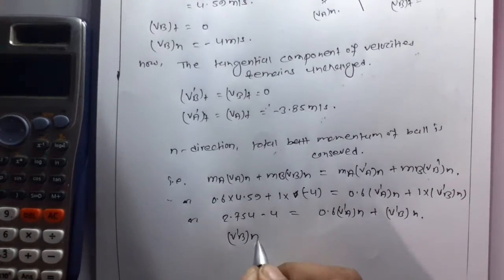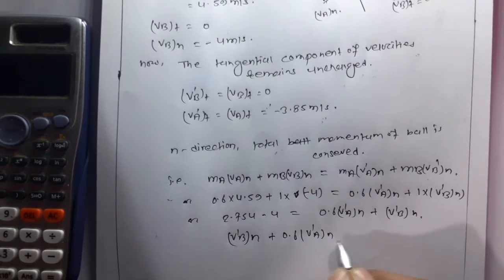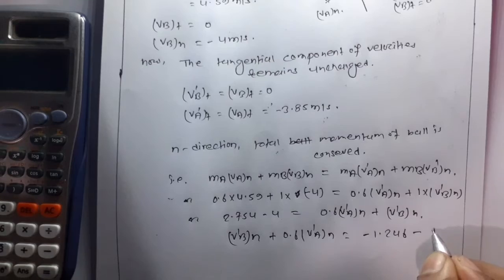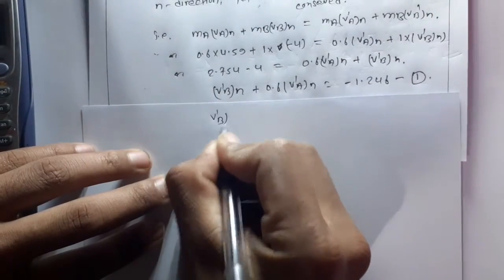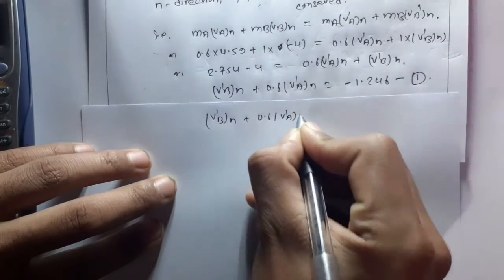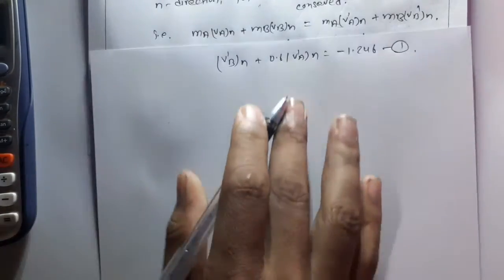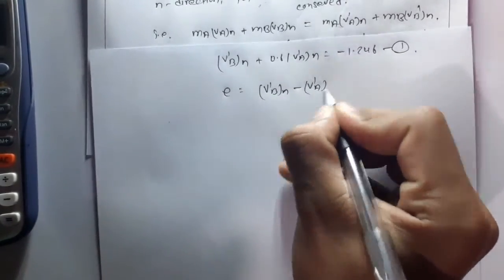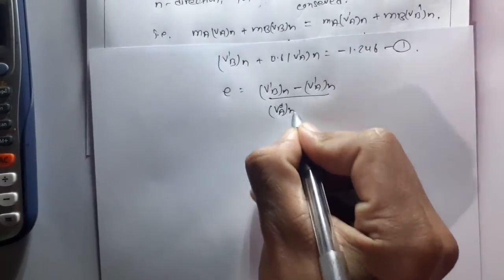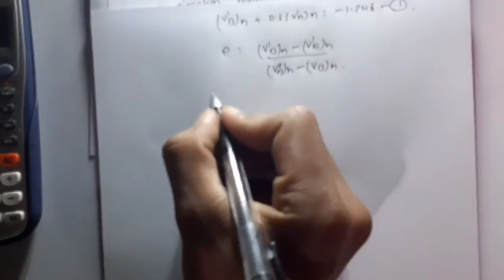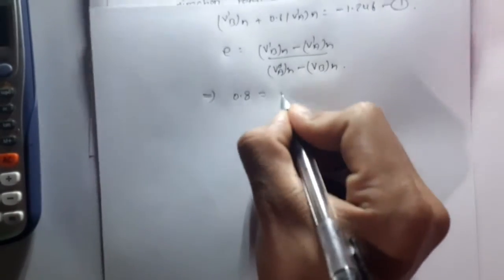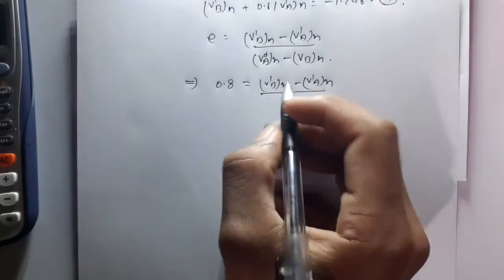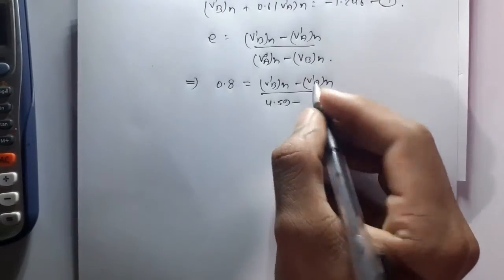So V'_BN + 0.6·V'_AN = minus 1.246. This is equation number 1. Now, the coefficient of restitution is given by: e = (V'_BN − V'_AN) / (V_AN − V_BN). So 0.8 = (V'_BN − V'_AN) / (4.59 − (−4)), which is 0.8 = (V'_BN − V'_AN) / 8.59.